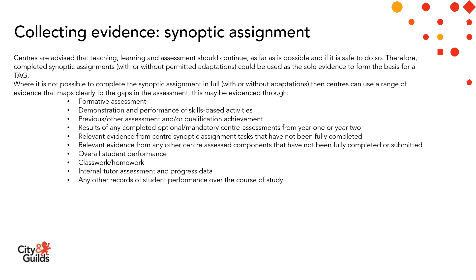Where it's not possible to complete the synoptic assignment in full — with or without the adaptations — centres can use a range of evidence that maps clearly to the gaps in assessment. This may include evidence through formative assessment, a demonstration and performance of skills-based activities, or previous or other assessment and qualification achievement. It could also include results from any completed optional or mandatory centre assessments from year one or two, relevant evidence from centre synoptic assignment tasks that have not been fully completed or submitted, or the overall student performance including classwork, homework, internal tutor assessment and progress data, and any other records of student performance over the course of study.